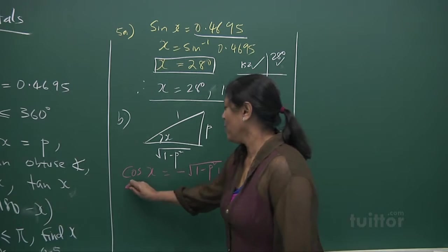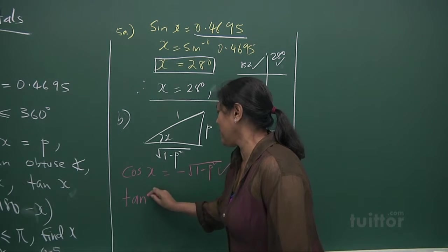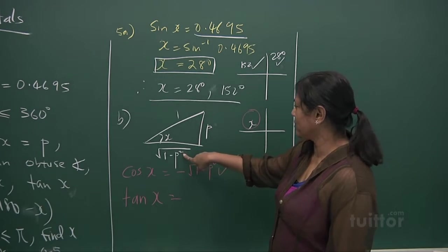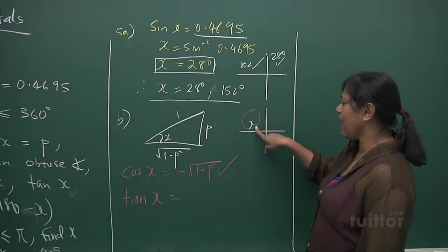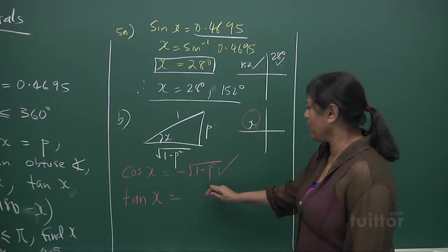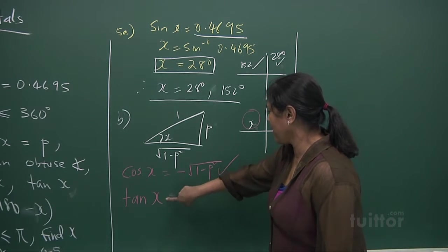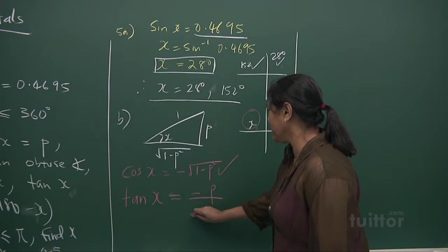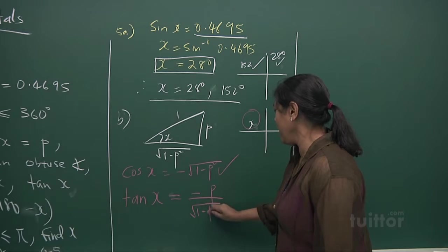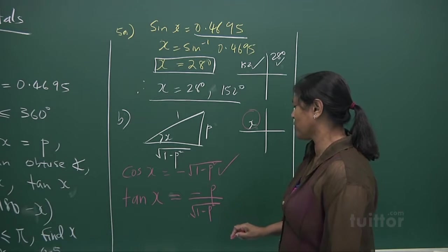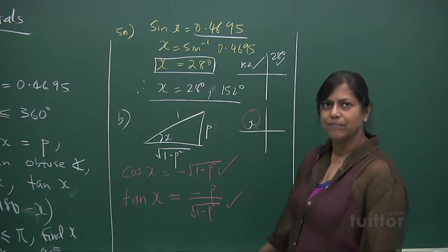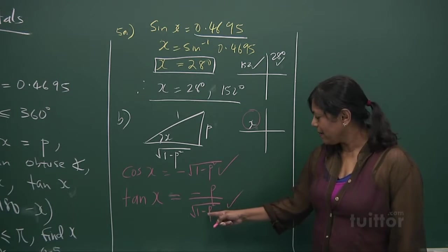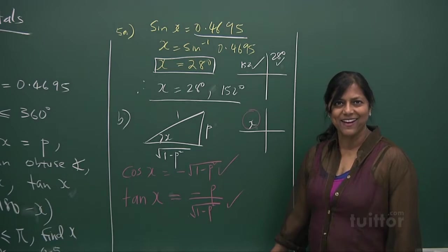Next part, they want you to find out what is tangent x. Tangent x, opposite over adjacent. X is lying in this quadrant, it's going to be negative. It's going to be negative P over the square root of 1 minus P squared. That's your answer. Got it? Good.